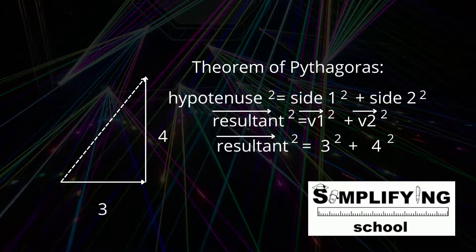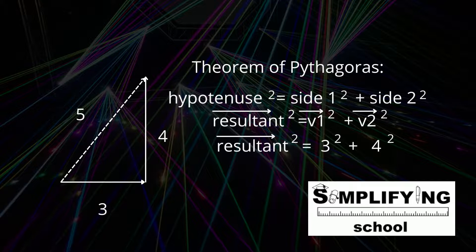So, we can go and do the calculation. 3 squared plus 4 squared is equal to the resultant squared, which would give me 25. Take the square root of 25, so the resultant vector's magnitude would be 5.